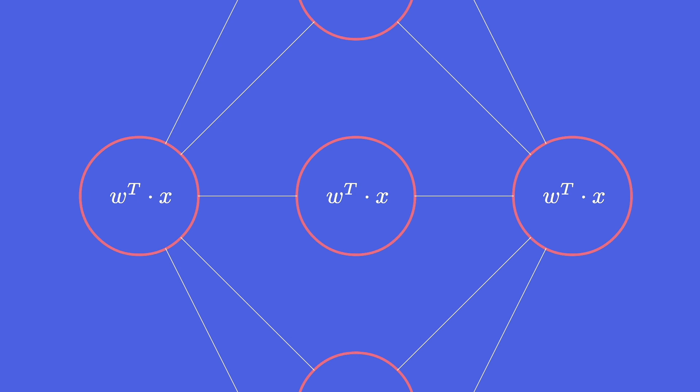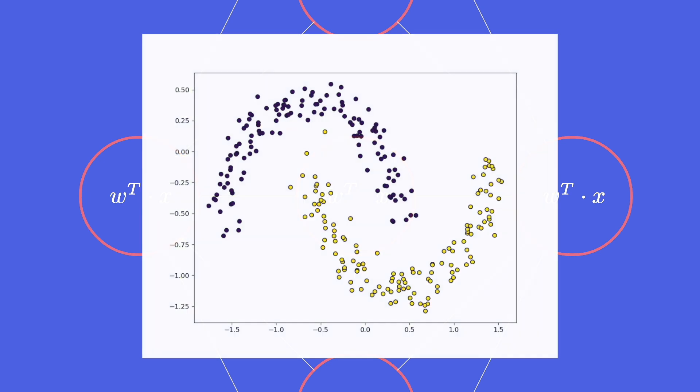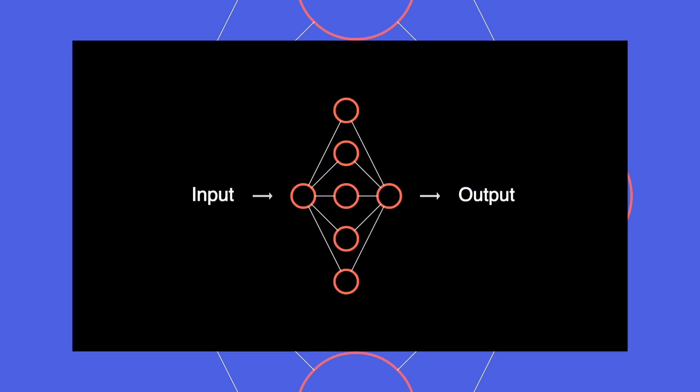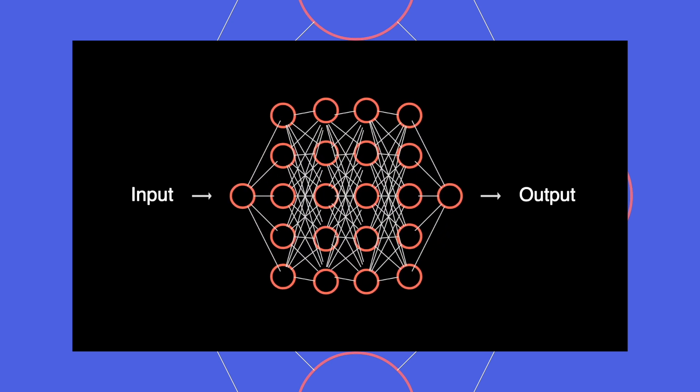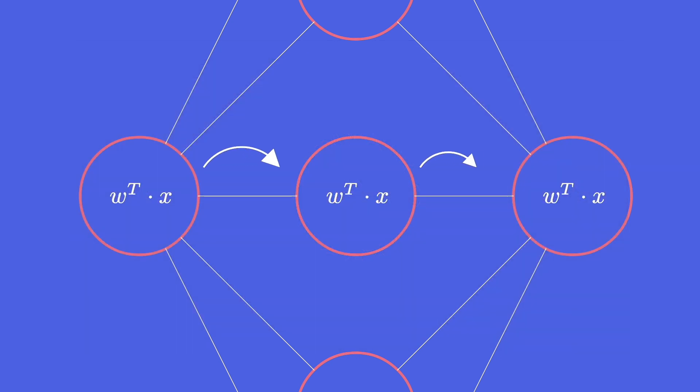Now this is fine as long as we have a simple problem like this where we can model the predictions with a linear function. But let's say we have a more complex problem. One thing we can do is of course add more layers to our network. But here's a big problem. Without activation functions we only get linear transformations after each other. So our whole network is basically just a stacked linear regression model that is not able to learn complex patterns. And this is exactly why activation functions come into play.